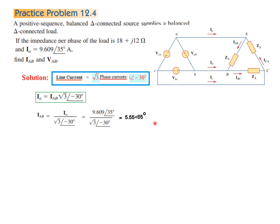Phase current IAB = IA divided by √3 at ∠+30°. Plugging in the given IA value, we get IAB = 5.55∠65°. The other phase currents can be found by adding ±120°, but here only IAB is required. Next, VAB = IAB × Z_delta. With IAB calculated and Z_delta given, we compute directly using complex mode on the calculator to get the final answer.